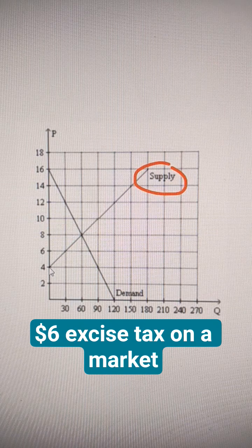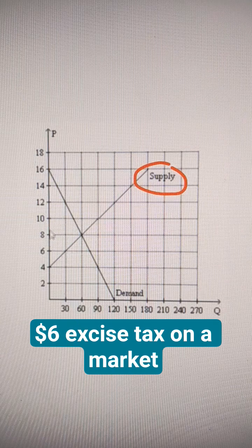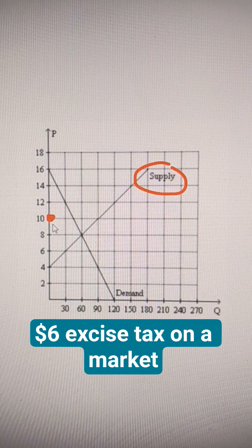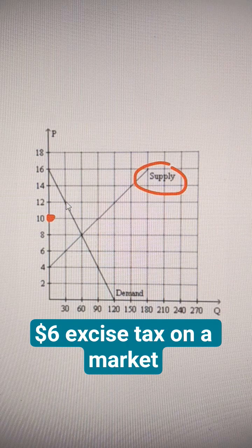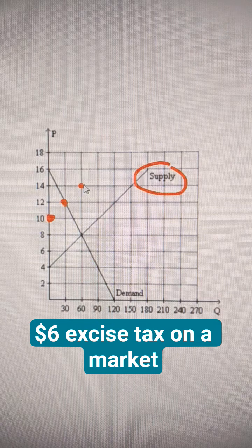So if it's $6, go from $4 up to $10. This is the start of our new supply curve. $6 up to $12, $8 up to $14.